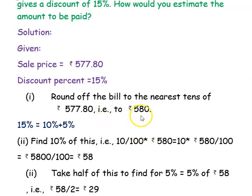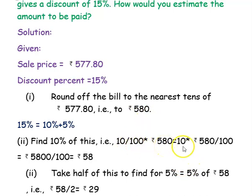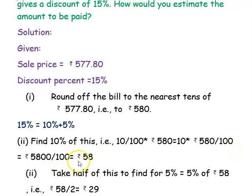So that is 10 divided by 100 into rupees 580, which we can write as 10 into rupees 580 divided by 100. On simplifying this you will get rupees 58. So this is your discount amount for 10 percent.